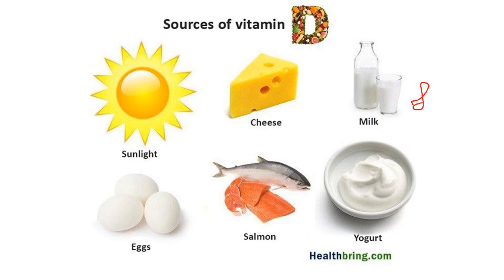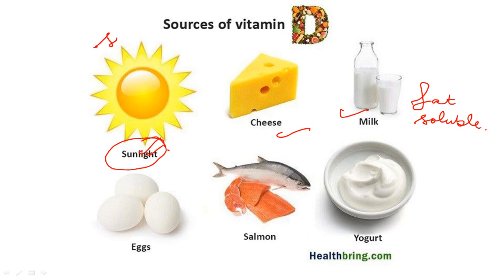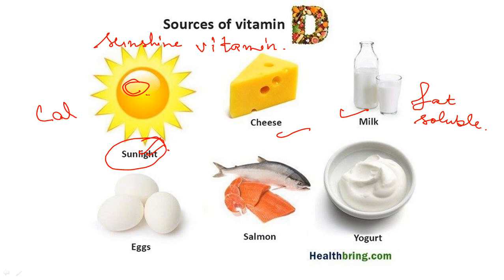Vitamin D is fat-soluble. Milk, cheese, and butter are the richest sources of vitamin D. Our body can also make vitamin D with the help of sunlight, which is why vitamin D is known as the sunshine vitamin. Sunrays react with the oils of the skin to produce vitamin D naturally within the body. People living in air-conditioned houses and offices are apt to be deficient in vitamin D. It helps in the utilization of calcium and hence prevents softening and deformation of bones and teeth, making our bones and teeth strong.